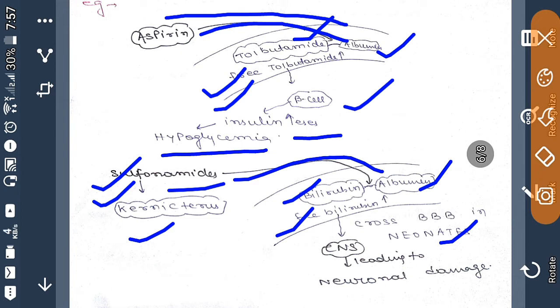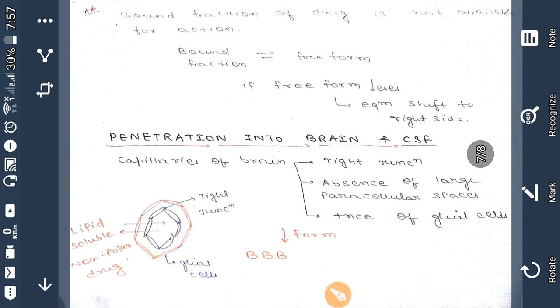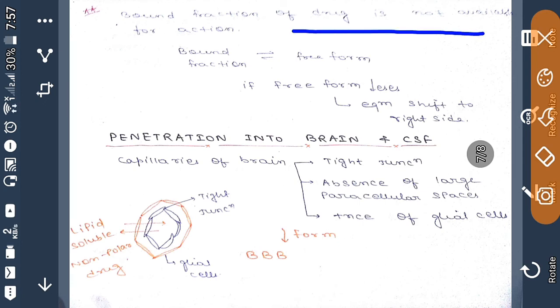Blood-brain barrier in neonates is not fully developed and it will cause certain neural damage in CNS, which is termed as kernicterus. This is a clinical point of the displacement reactions.